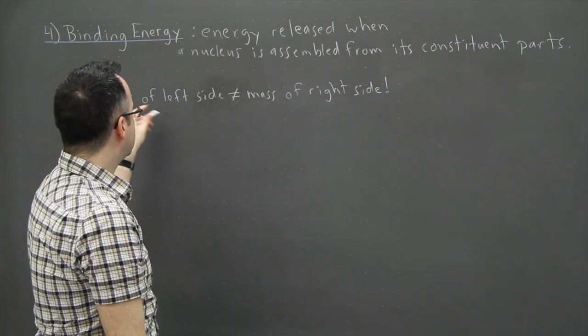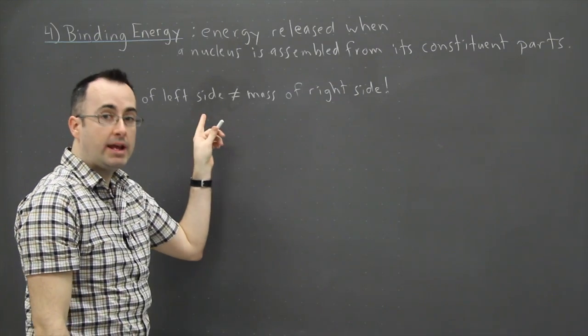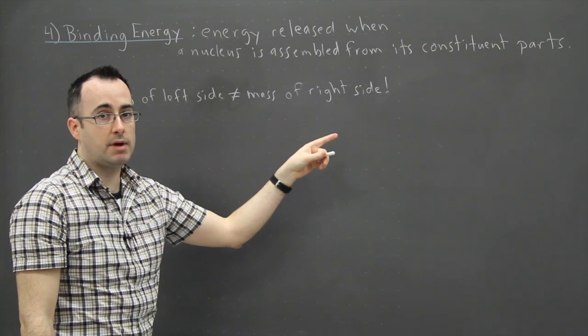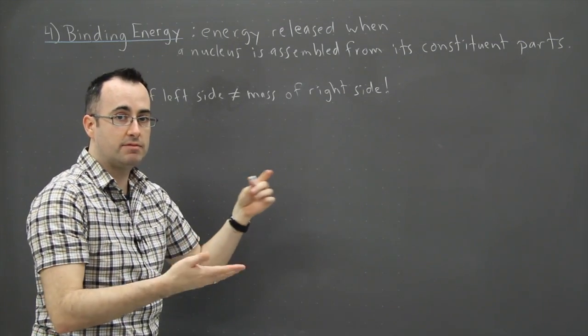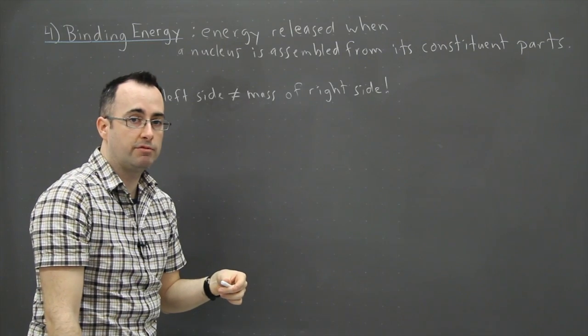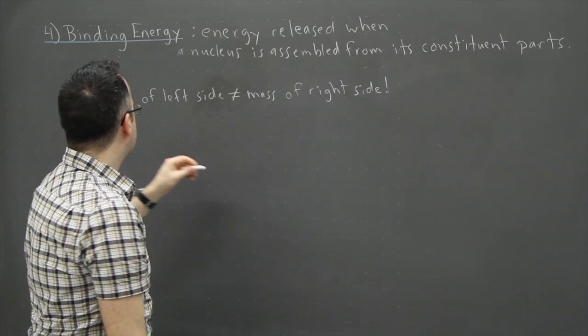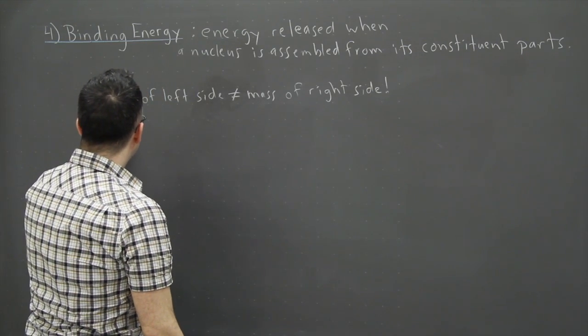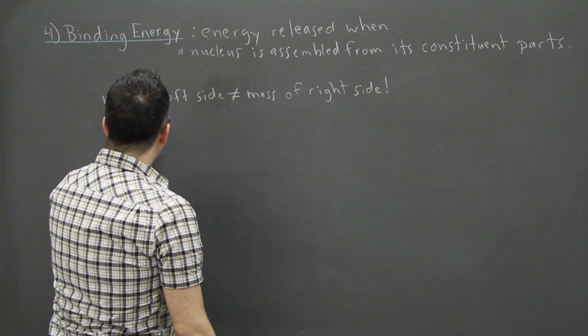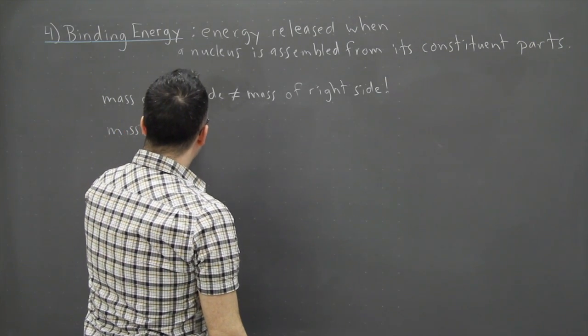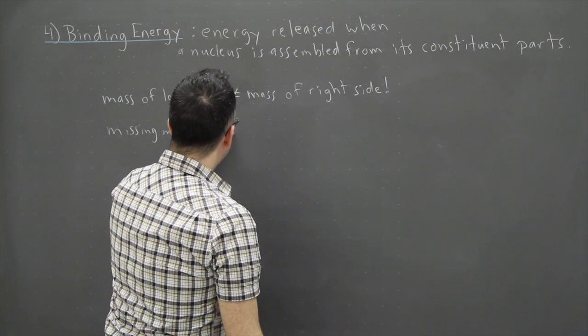Now this missing mass, by the way, this left hand side mass is going to be greater than the right hand side mass in these types of decay equations like we were looking at before. So what that means is that the missing mass, this is the key thing here, the missing mass is called the mass defect.